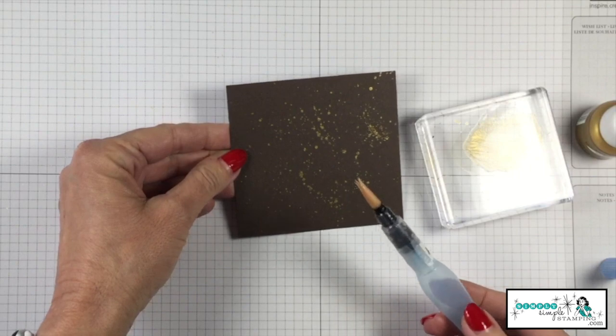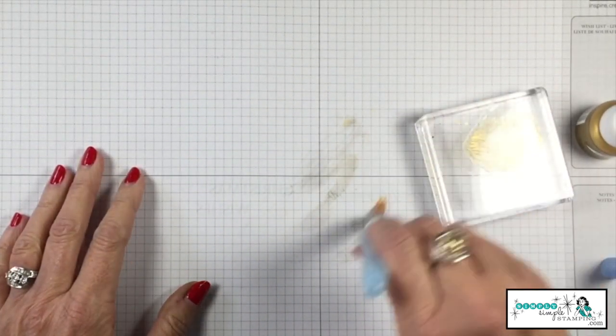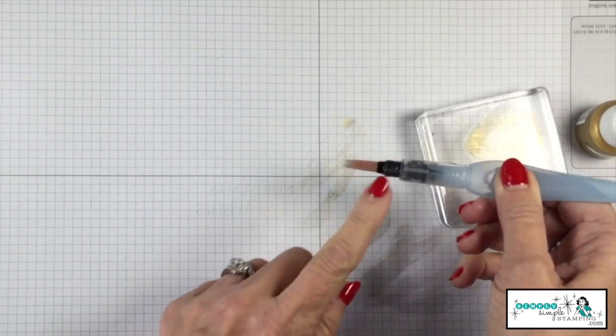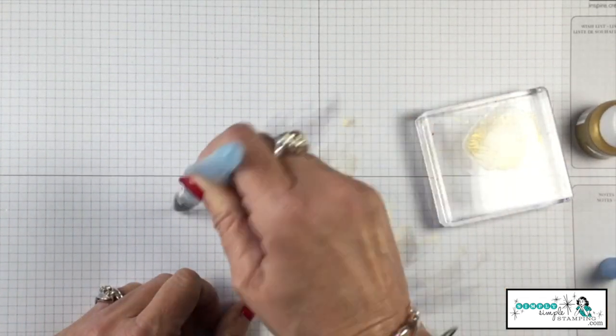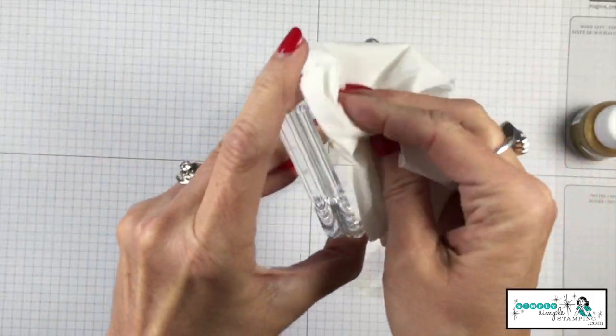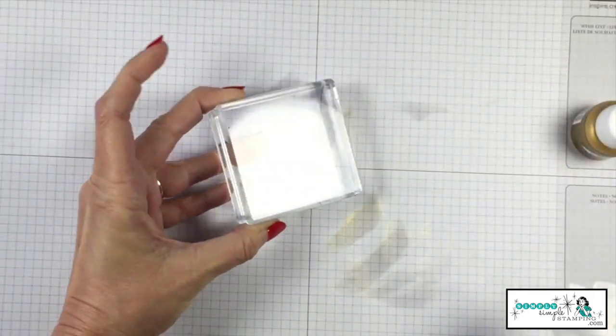When you're done with your card, you do want to clean this very well. So I'm squeezing. Can you see that shimmer coming out? I'm just squeezing the barrel, letting that rubbing alcohol come through until it's clean. Cleaning up your clear block. Well, it's as easy as that.